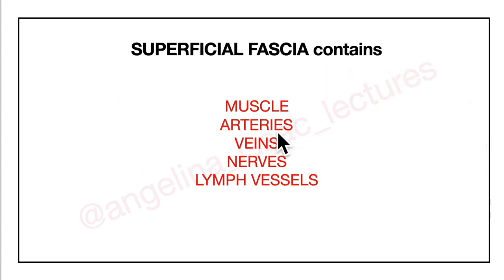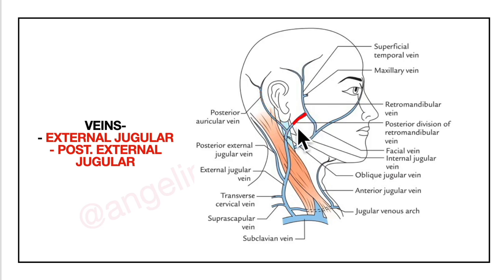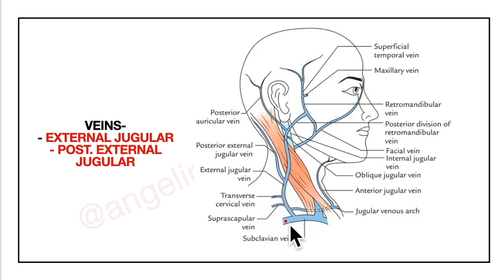Finally we have the lymph vessels, which pierce the deep fascia to end in the supraclavicular lymph nodes. Now there is one structure, the external jugular vein, that we have to learn in detail. The external jugular vein lies deep to the platysma muscle. It is formed by the union of the posterior auricular vein and the posterior division of the retromandibular vein. It begins within the lower part of the parotid gland and crosses the sternocleidomastoid muscle obliquely. It pierces the anteroinferior angle of the roof of the posterior triangle and opens into the subclavian vein.